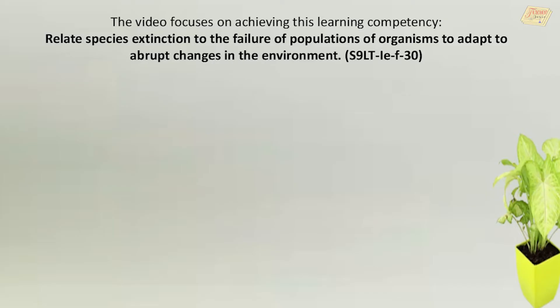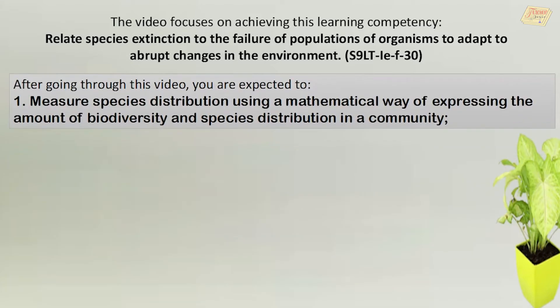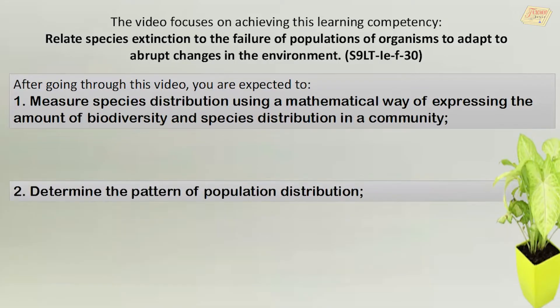This video focuses on achieving this learning competency: Relate species extinction to the failure of populations of organisms to adapt to abrupt changes in the environment. After going through this video, you are expected to measure species distribution using a mathematical way of expressing the amount of biodiversity and species distribution in a community.